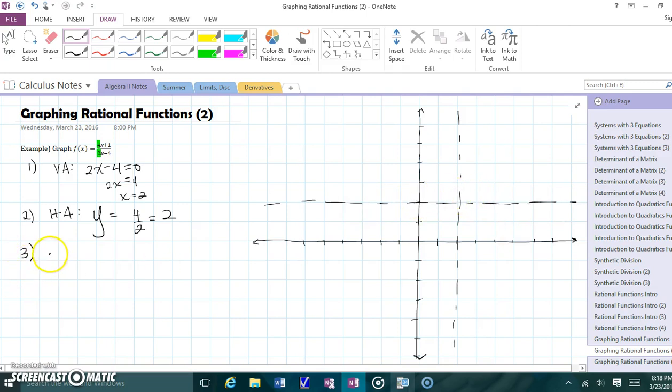Step number 3 is the x-intercept. I'm going to set my numerator equal to 0. So 4x plus 1 equals 0. 4x equals negative 1. x equals negative 1 fourth. So that means I'm right about there. You're going to be plotting a lot of fractions when you do this. So get good at kind of estimating what's going on here.